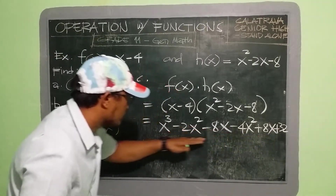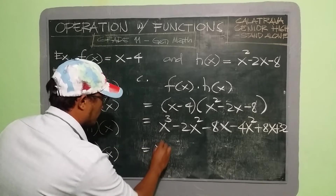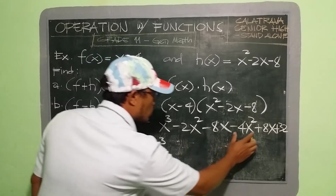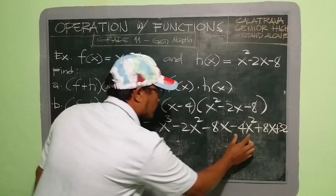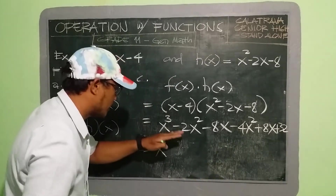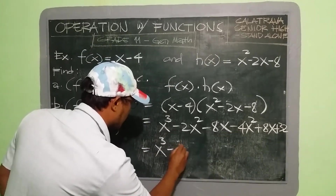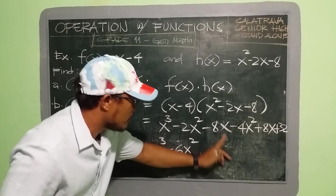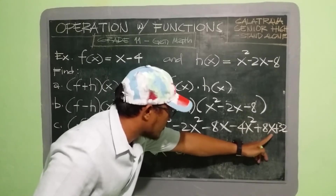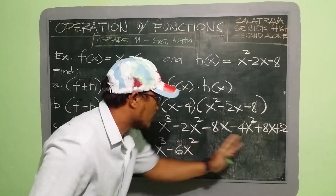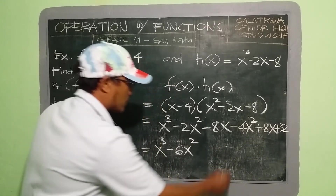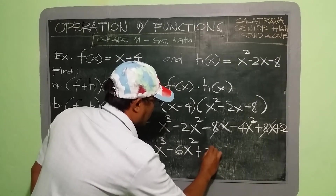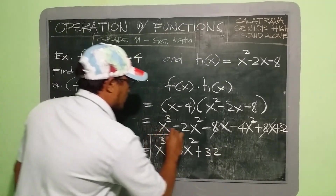Bring down x³ since there's only one. For x² terms: −2x² and −4x² have the same sign, so −2 + (−4) = −6x². For x terms: −8x + 8x = 0, so they cancel out. And we have plus 32. So our final answer is x³ − 6x² + 32.